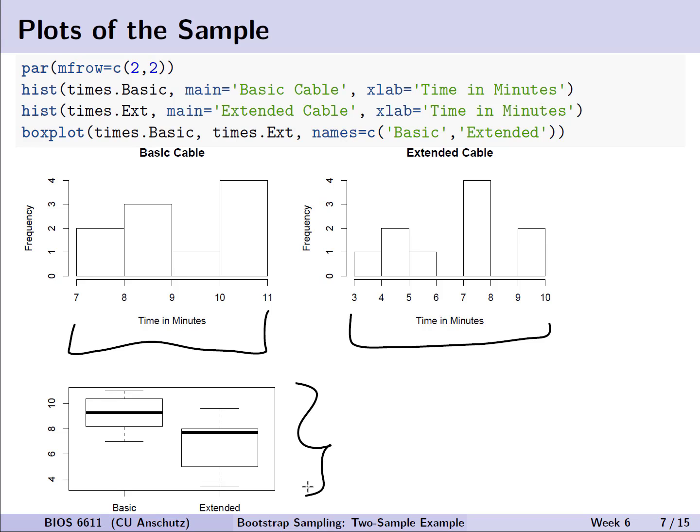Looking at our box plot on the bottom left, we actually can see that the basic cable group appears to be somewhat symmetric, based on this representation of the median and the 25th and 75th quartiles,